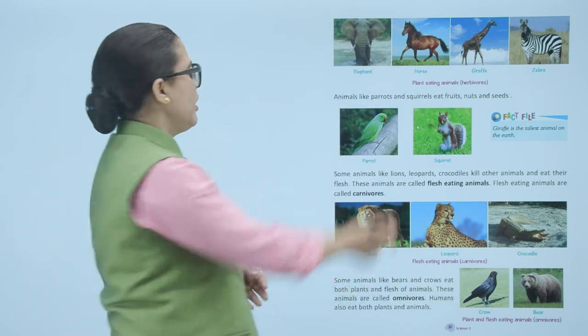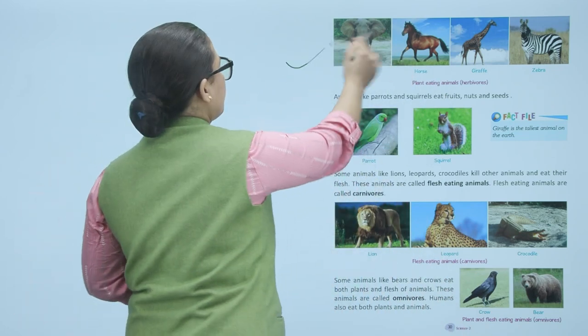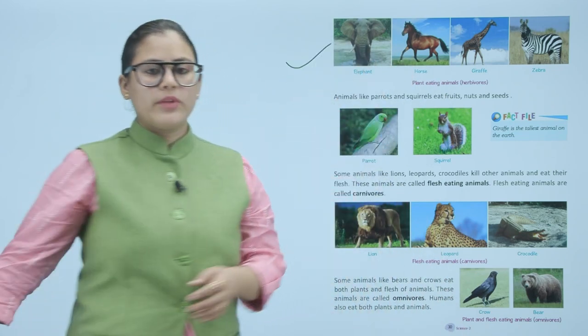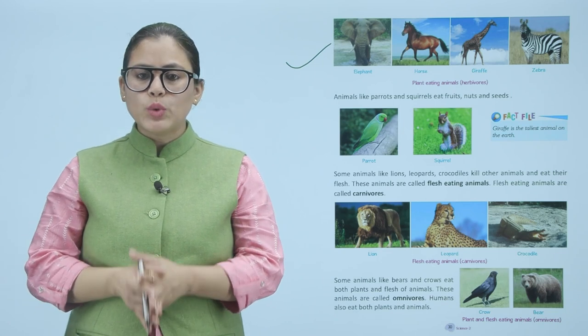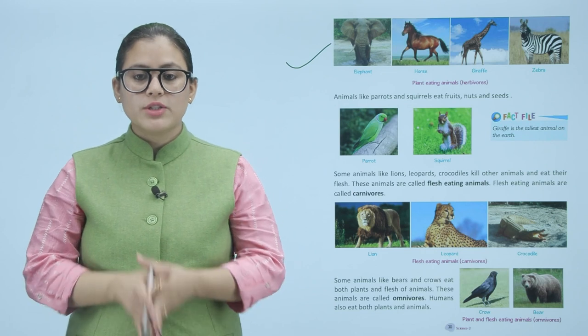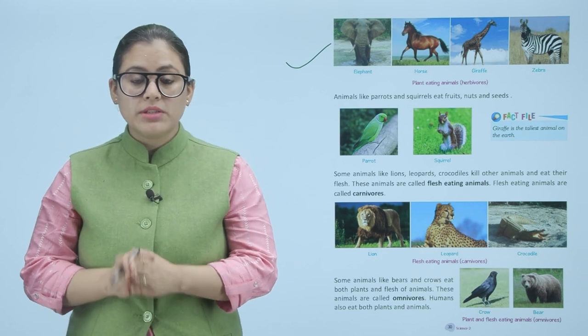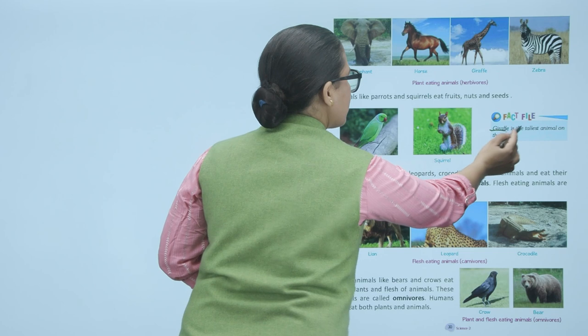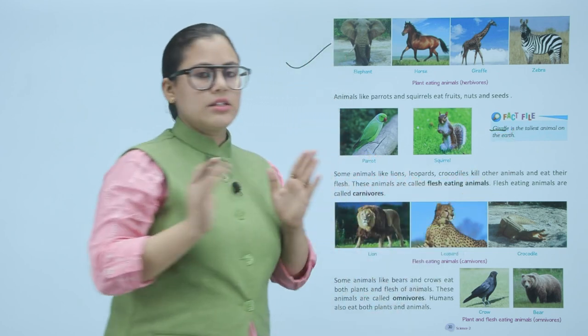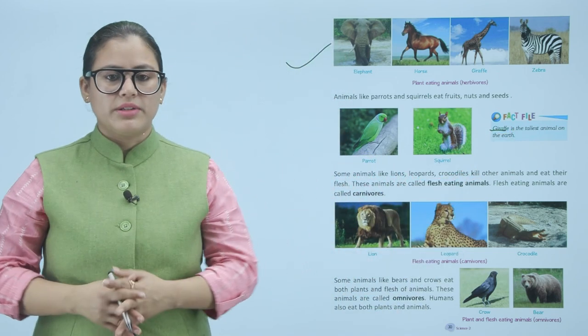Animals like parrots and squirrels eat fruits, nuts, and seeds — these are all herbivores. Fact file: the giraffe is the tallest animal on Earth.